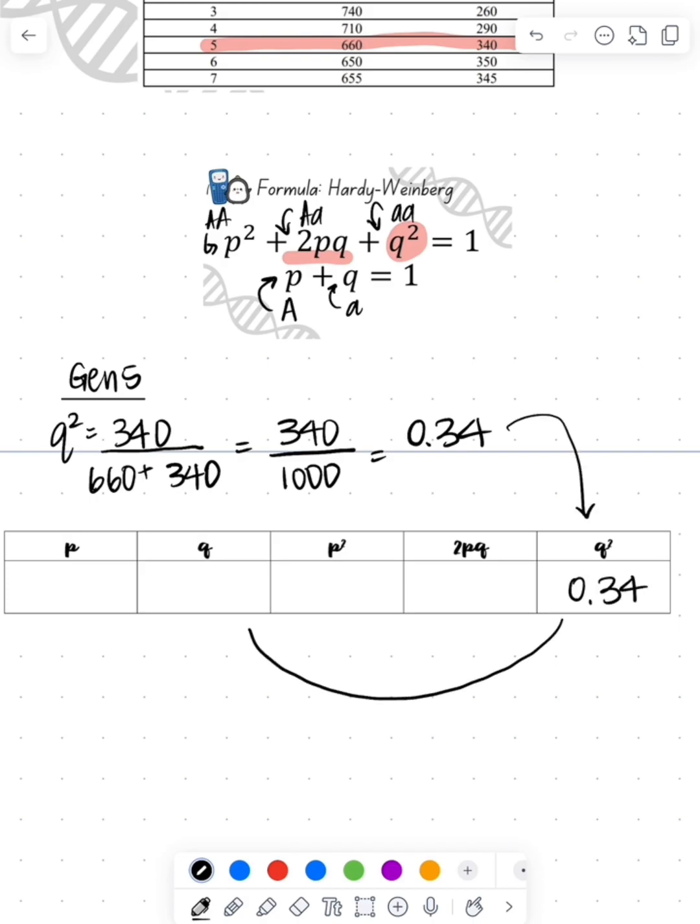To find Q, we take the square root of 0.34, which is going to give us 0.58. Then we do 1 minus our Q, which gives us our P, which is going to be 0.42.